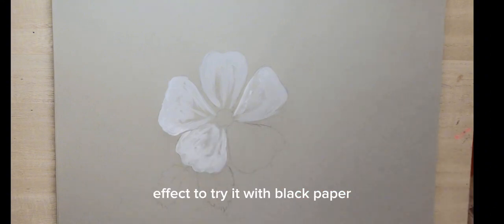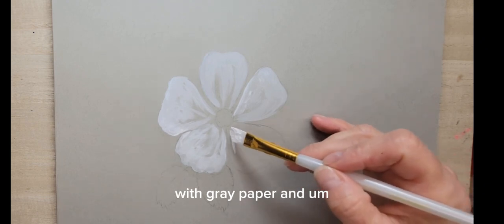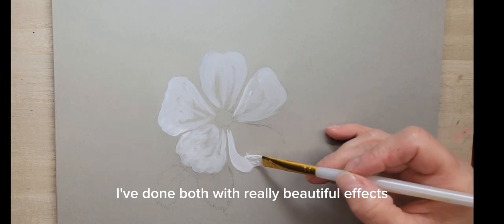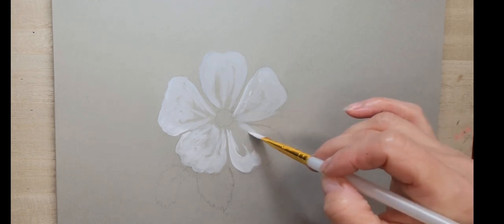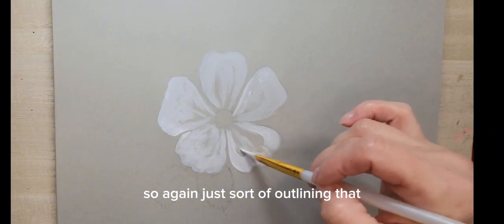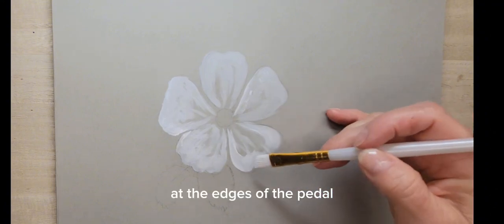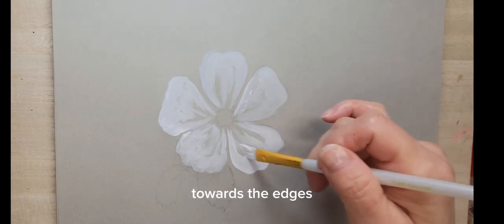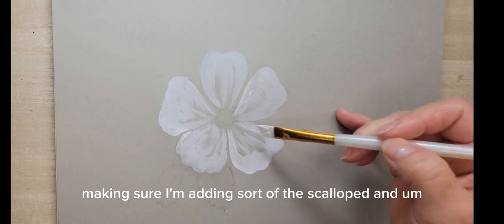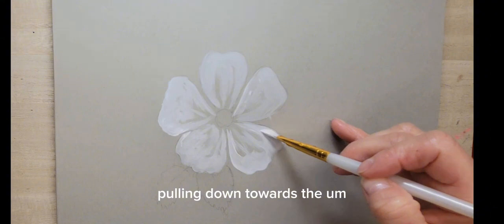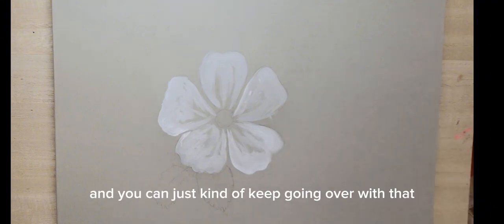It gives really beautiful effects if you paint on colored paper. It's a really nice effect to try with black paper or gray paper. I'm just outlining the edges of the petal, working out towards the edges, making sure I'm adding this scalloped effect and pulling down towards the edges of the petals.